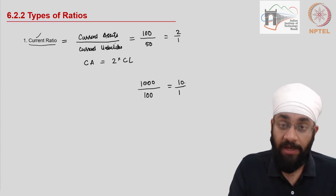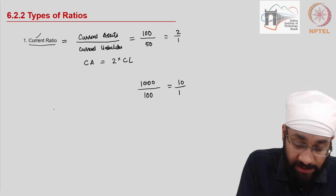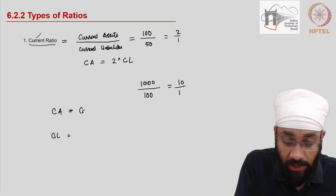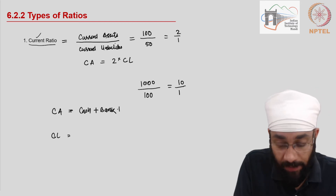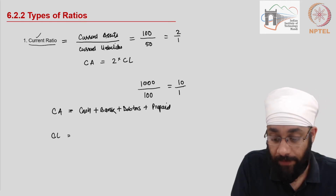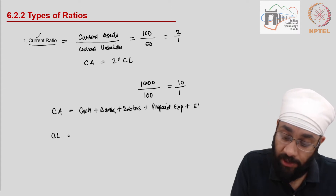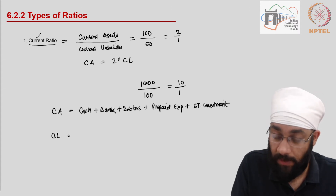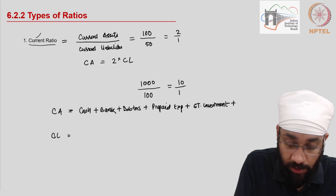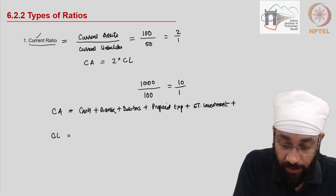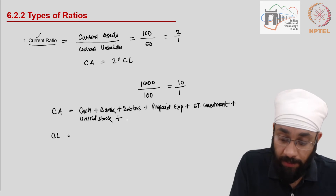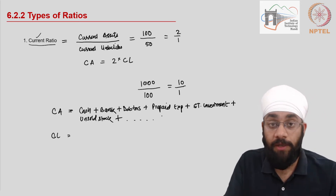That's how you calculate and interpret the current ratio. The typical items you will see in current assets include cash, bank balance, debtors, prepaid expenses, short-term investments, and unsold stock. The list can vary depending upon the nature of the company.